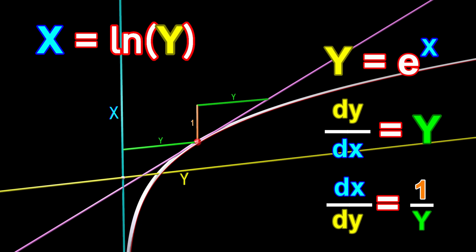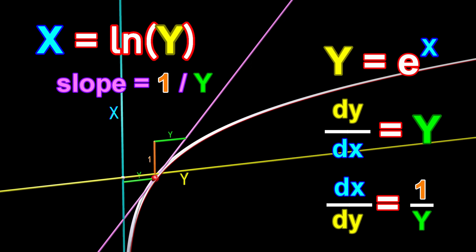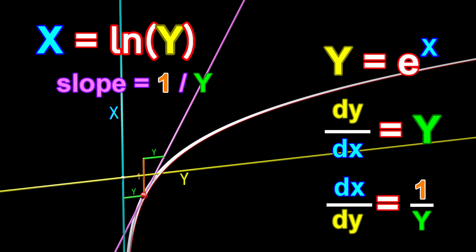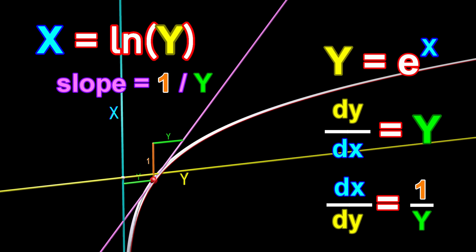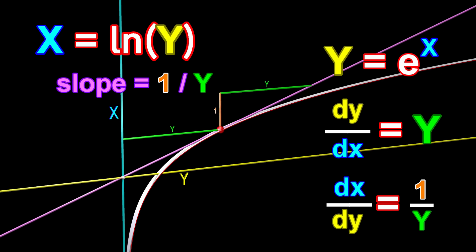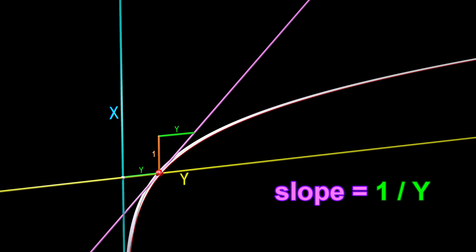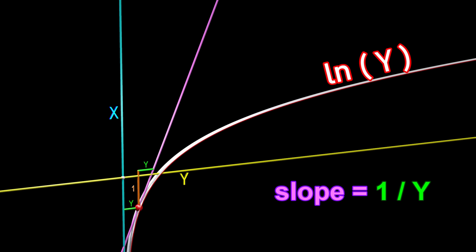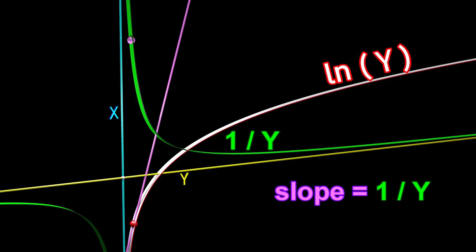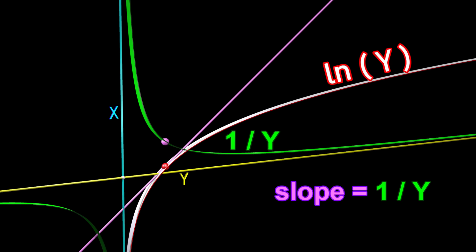The slope of the purple line is equal to 1 divided by y. Let's show the function x equals 1 divided by y as a green curve with a purple sphere traveling along it. The height of the purple sphere is always exactly equal to the slope of the purple line.